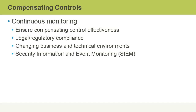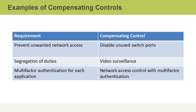Some examples of compensating controls include a requirement where we have to prevent unwanted network access. Our compensating control might be to disable unused switch ports.